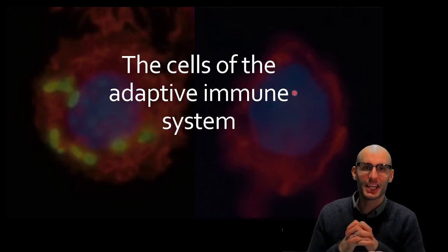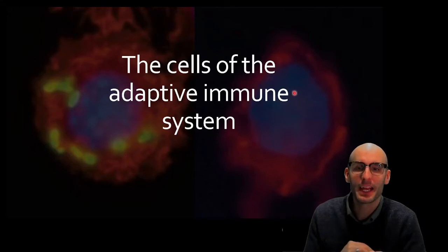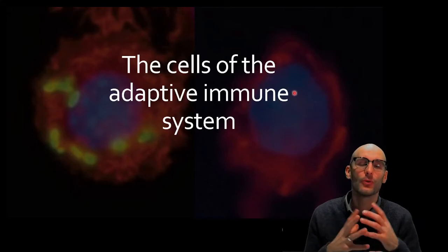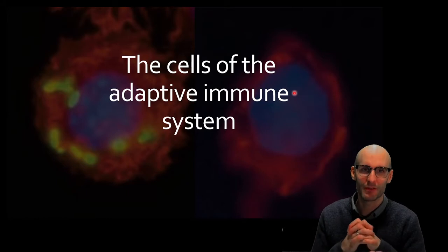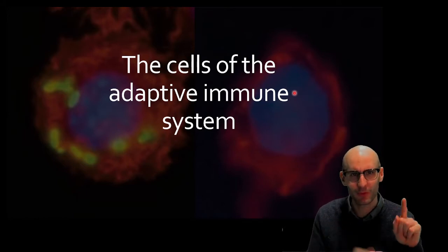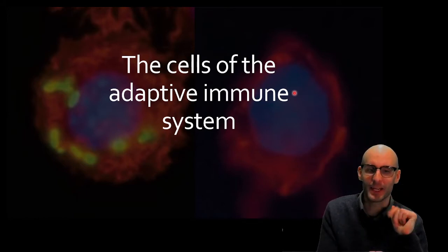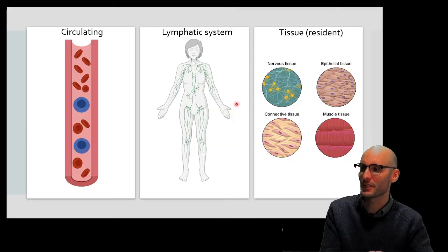Hey team, Dr. Jack Audie here and in this video we're going to be covering the cells of the adaptive immune system. In particular, two main cell types, the T cell and the B cell. So let's jump into it.